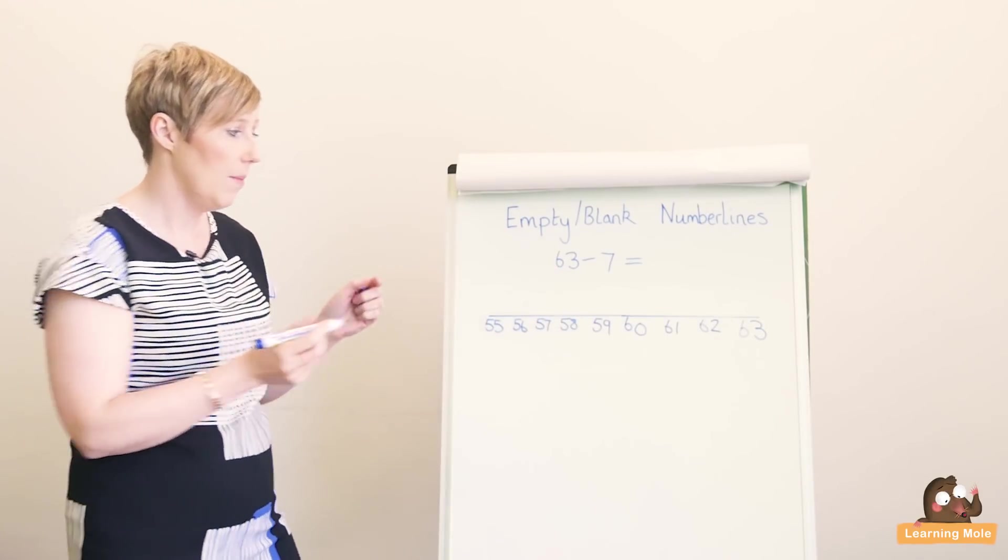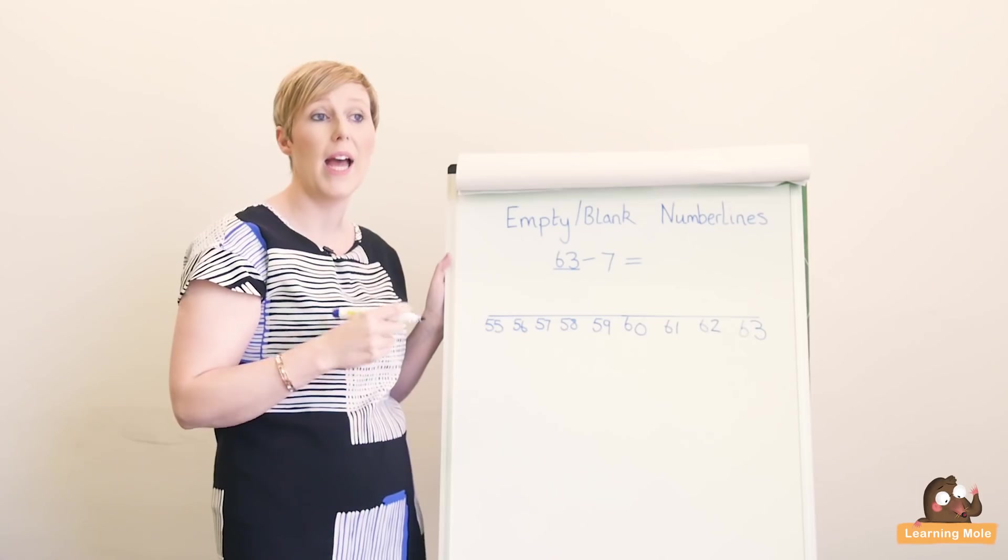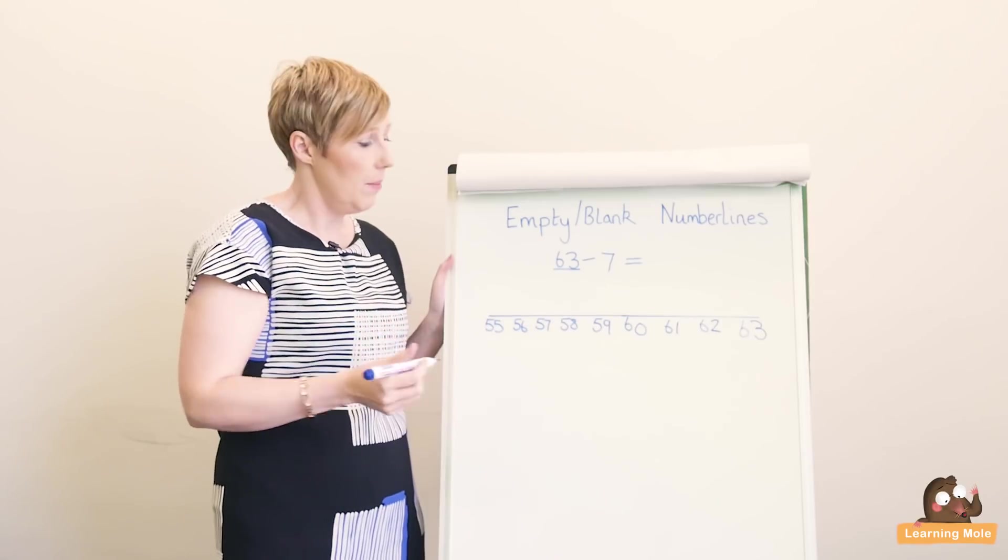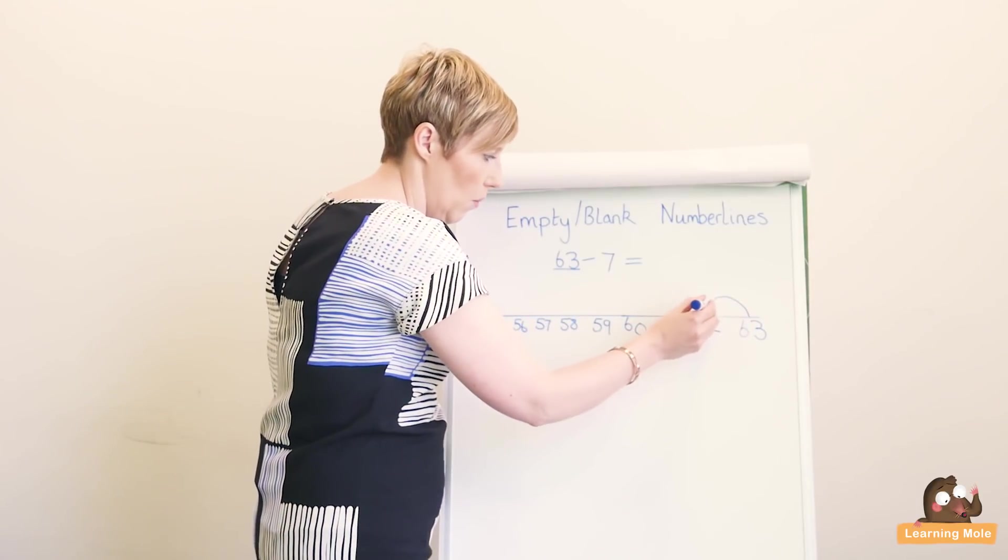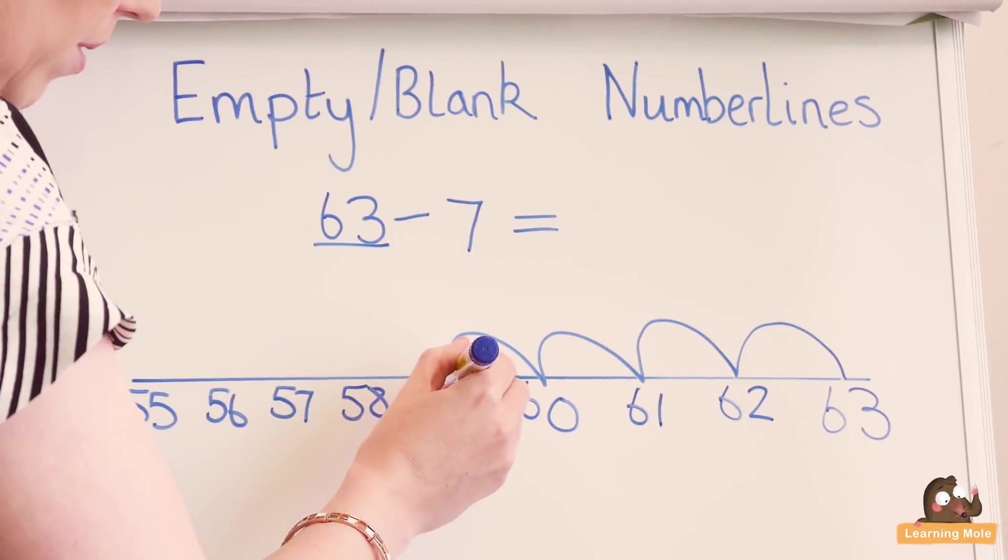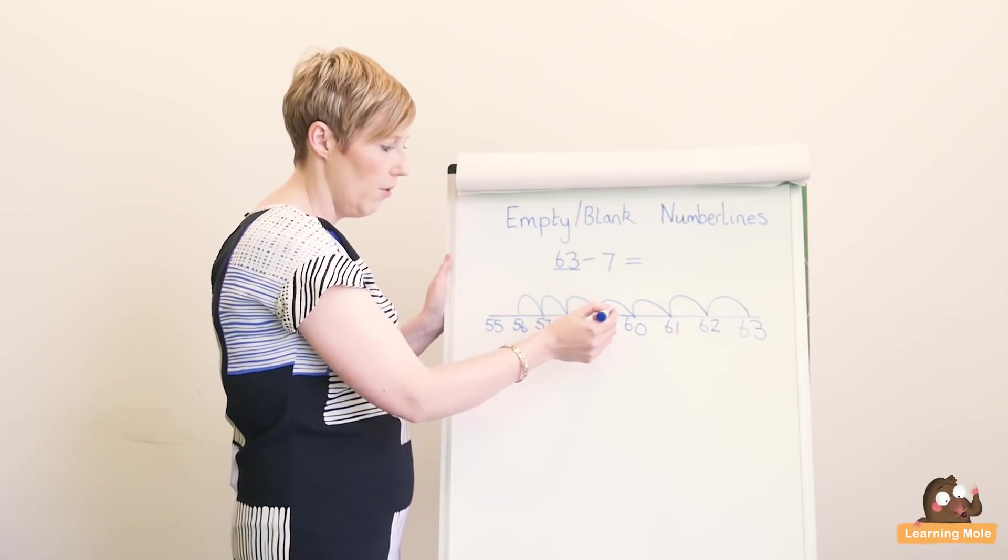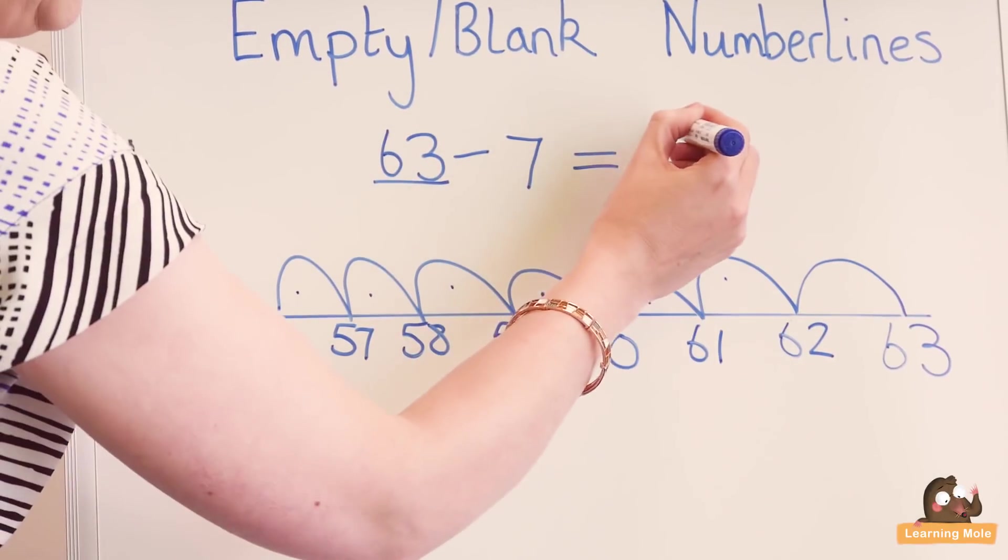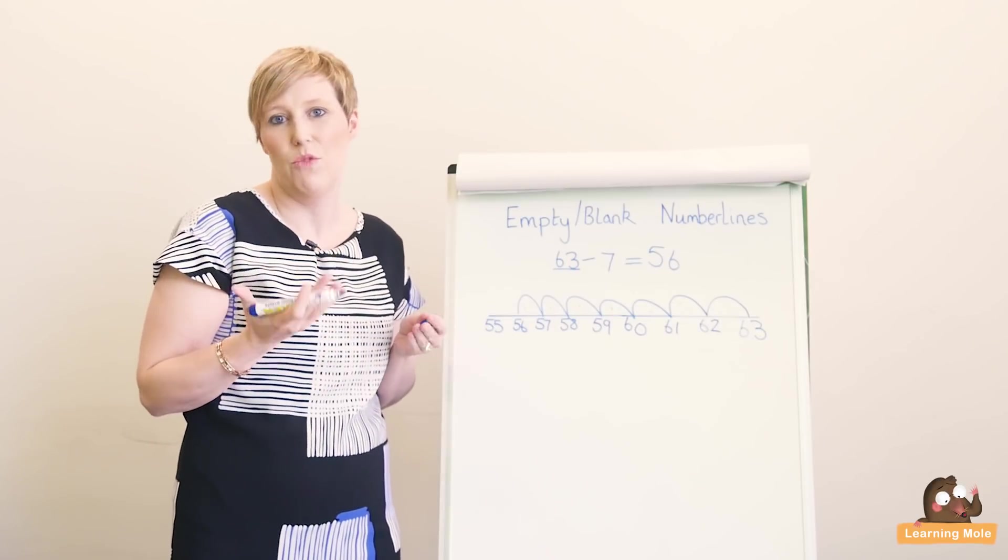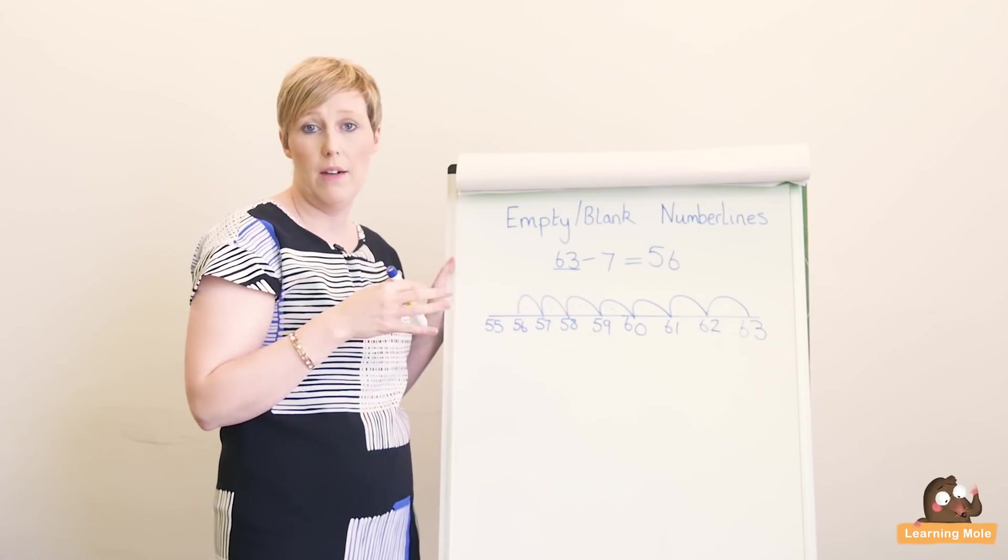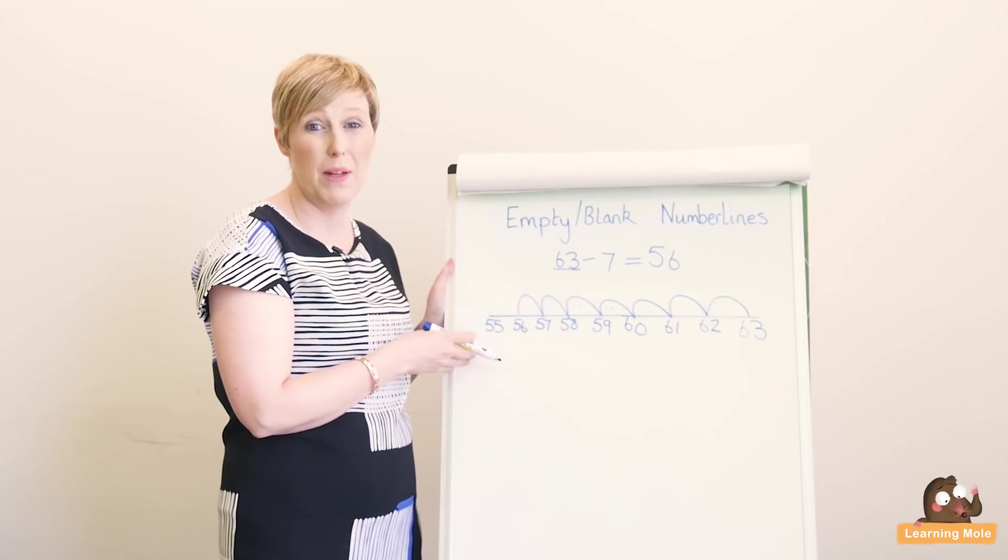So I've put my numbers on, and I know I've got my 63 on there. I even get my children to underline the number they're working with and check that it's on there first, and then they're counting back seven. Starting at 63 and counting back seven: one, two, three, four, five, six, seven. My answer is 56. So really clear visual for your child, and no resources necessary. If your child needs to work this out somewhere, whether in school or anywhere when they have a pen and paper, they've got a resource with them, which is always great.